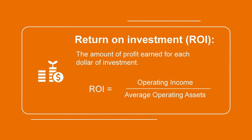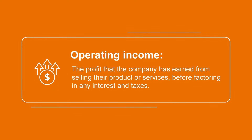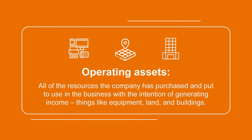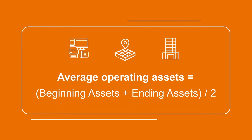When business units are set up as investment centers, every dollar they expend on operating assets that they use to generate operating income would be considered an investment. The calculation for return on investment in this type of scenario is operating income divided by average operating assets. Operating income is the profit that the company has earned from selling their products or services before factoring in any interest or taxes, calculated by taking revenue generated less the operating expenses of the business unit. Operating assets are all of the resources the company has purchased and put to use in the business with the intention of generating income — things like equipment, land, and buildings. To calculate the average operating assets, we take the company's beginning asset value at the start of the period plus the ending value and divide by 2.